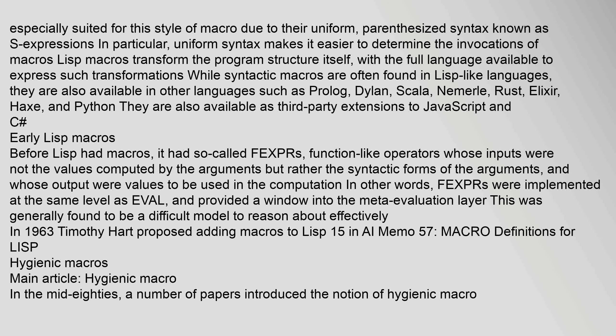Before Lisp had macros, it had so-called fexprs — function-like operators whose inputs were not the values computed by the arguments but rather the syntactic forms of the arguments, and whose output were values to be used in the computation. In other words, fexprs were implemented at the same level as eval and provided a window into the meta-evaluation layer. This was generally found to be a difficult model to reason about effectively.